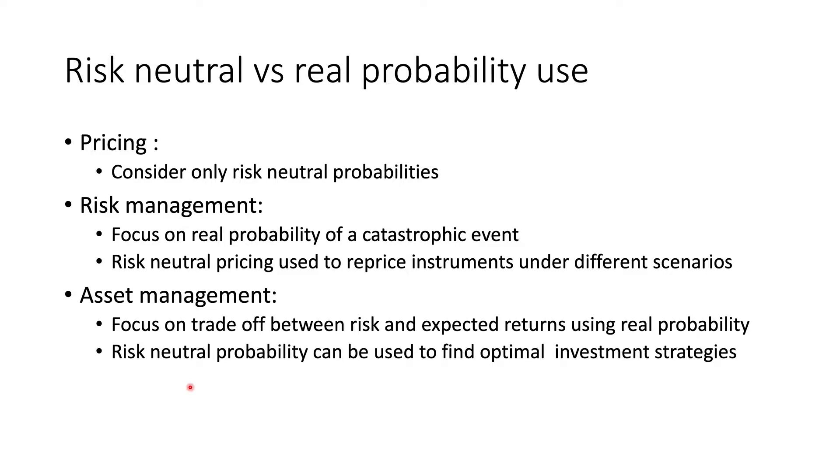So then let's give a very broad overview of when we use risk neutral and when we use the real world probability. We've seen so far when using pricing, we only care about the risk neutral probabilities. And we have covered this extensively so far using the binomial model. But however, for risk management, risk managers don't care about the probability of default in some imaginary dimension. They really care about the real probability of a catastrophic event happening that could impact their business. So in risk management, they will be really focused on using real world probabilities.